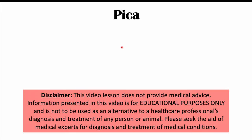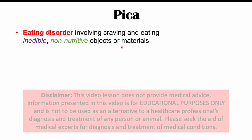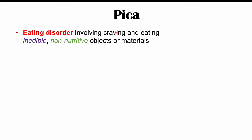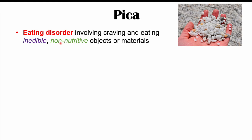Hi everyone, welcome back to another lesson. We're talking about pica in this lesson. Pica is an eating disorder involving craving and eating inedible, non-nutritive objects or materials. We're going to talk about some common items people will eat when they have pica, certain medical and psychiatric conditions that are more likely to cause it, as well as complications that can occur and ways to treat it.